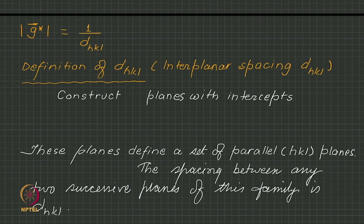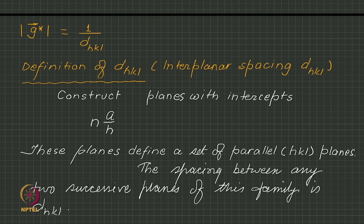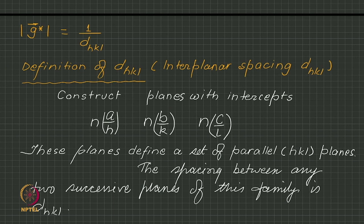d_hkl is the symbol for interplanar spacing. It requires a careful definition — it is not obvious what d_hkl is and is sometimes left undefined. We define d_hkl by constructing planes with intercepts n·a/h, n·b/k, and n·c/l, where hkl are integers, a, b, c are lengths, and n is an integer.